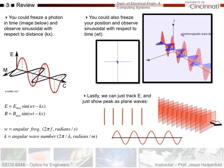Just a brief review: we've talked about photons many times before — oscillating E-field, oscillating magnetic field. You could freeze it with respect to distance and observe it oscillating versus time, or freeze time and view it versus distance. If you want to track the wave, you can track the E-field and show the peak of the E-field as plane waves. That's what we'll do today — just track the peaks of the E-field, not the whole photon.